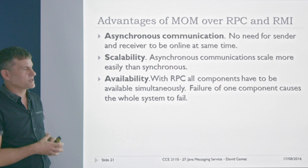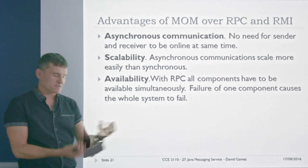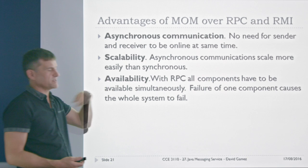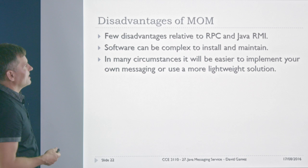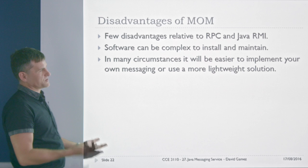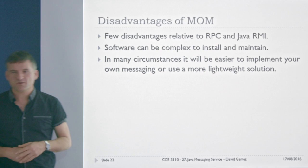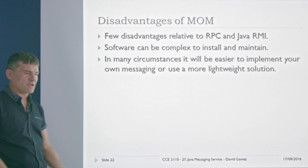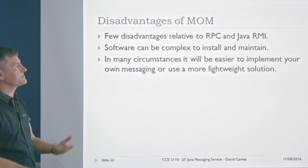Asynchronous communications scale more easily than synchronous ones. With remote procedure calls and Java RMI, all components need to be online simultaneously, which can be tricky to manage — if there's a network failure you're stuck. With message-oriented middleware there's much looser coupling between components and it's easier to handle temporary failures. There are few real disadvantages relative to RPC and RMI, but as you'll see, it's not trivial to install and maintain — Java RMI is actually a lot easier for smaller projects.